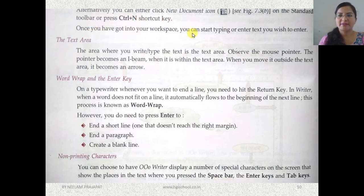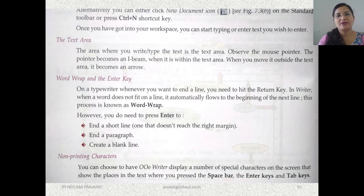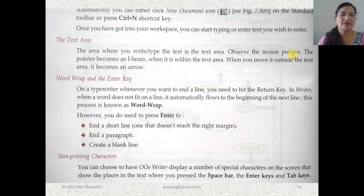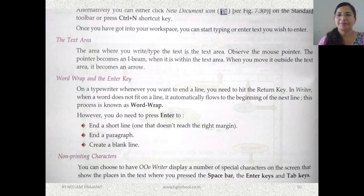Once you have got into your workspace, you can start typing or enter the text you wish to enter. The text area is the area where you type. You can observe the mouse pointer there — the pointer becomes an I-beam when it is within the text area. You might have seen a blinking cursor there. When you move it outside the text area, it becomes an arrow.